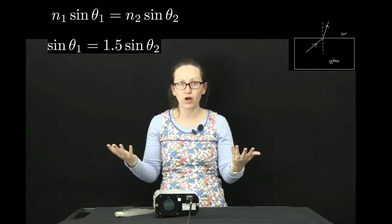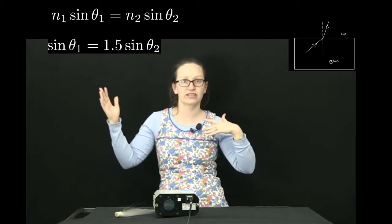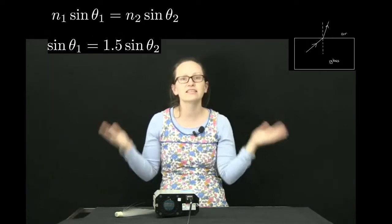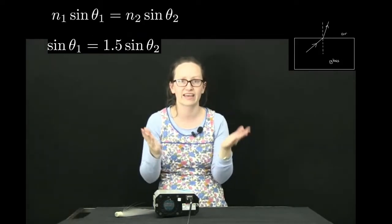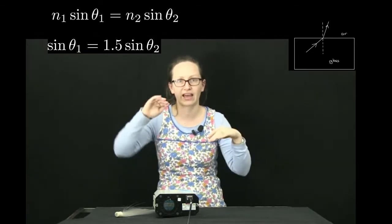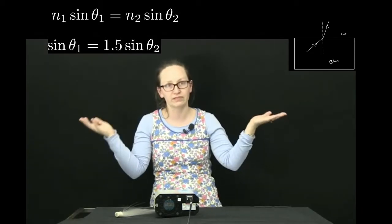Now for small angles where θ2 is around about less than 30 degrees, this is easy to solve. You can just solve it in your calculator and get the angle of refraction as the light goes into the air from the glass.